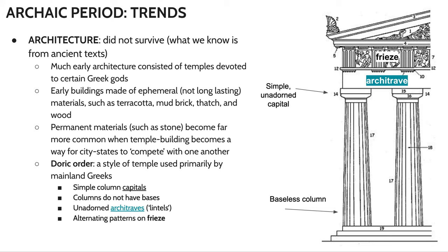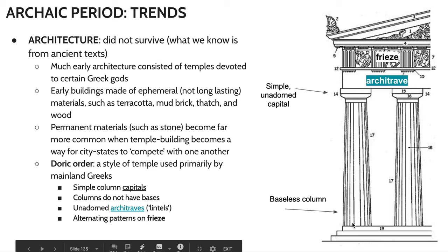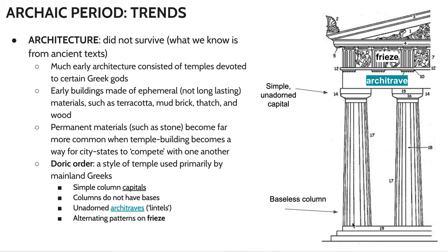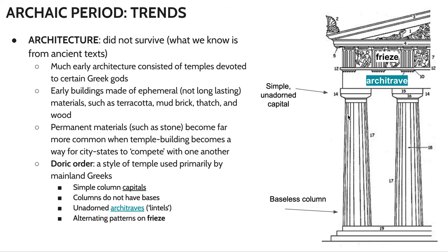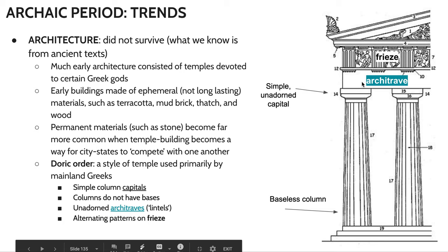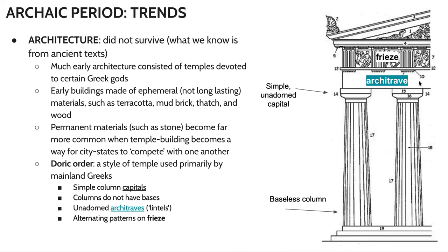The order of architecture we see during the Archaic period most frequently is the Doric order. These involve very simple column capitals and baseless columns. As we progress throughout the timeline of ancient Greece, you'll see that these columns will become more complex and more involved. In terms of other elements of architecture, we're still seeing post-and-lintel architecture — posts being the things that are holding the lintel up.